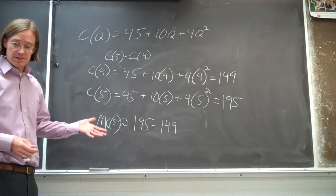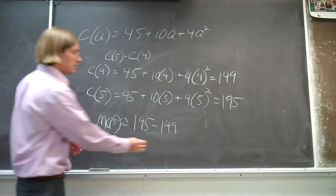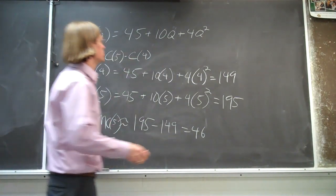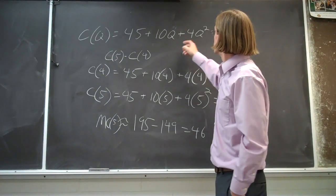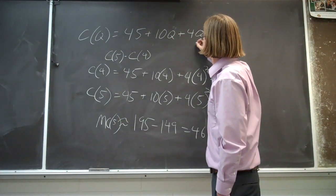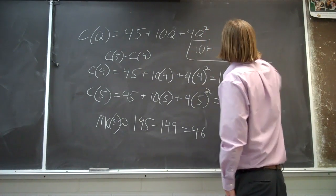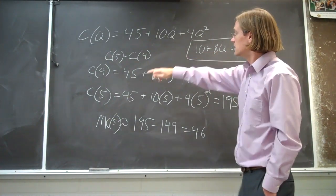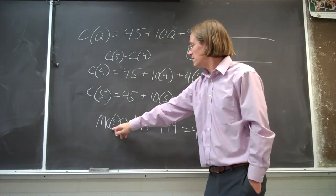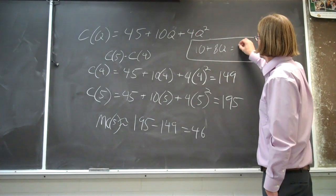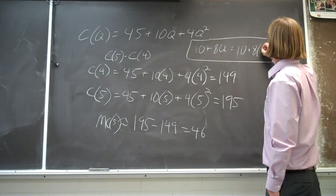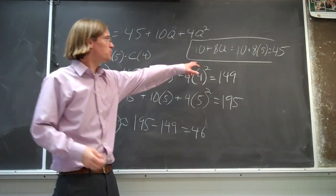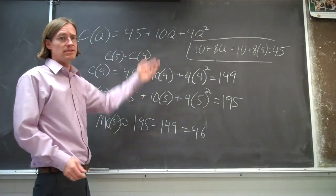An easier way to do this would have been to avoid all of that and use calculus. Let's take the derivative. If we took the derivative of our cost function, we'd get 10 plus 8q. Then we could plug in 5 — we're looking for the marginal cost of the fifth unit — and we'd get 10 plus 8 times 5, which should equal 50.